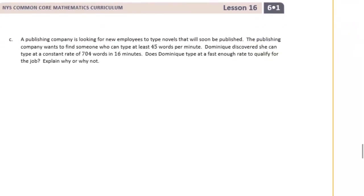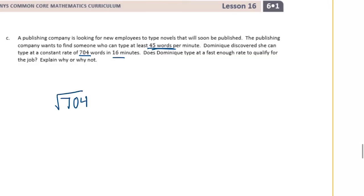And C. A publishing company is looking for new employees to type novels that will soon be published. The publishing company wants to find someone who can type at least 45 words per minute. Dominique discovered she can type at a constant rate of 704 words in 16 minutes. Does Dominique type at a fast enough rate to qualify for the job? Explain why or why not. We need to know if she can type at least 45 words per one minute. But we know what they've given us is 704 words in 16 minutes. Let's divide by 16 and see how many words she can type in one minute and see if it's fast enough.